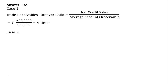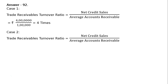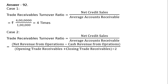Closing trade receivable Rs. 6 lakh. Trade receivables turnover ratio is equal to net credit sales upon average accounts receivable, that is net revenue from operations minus cash revenue from operations, which gives credit revenue from operations, whole divided by opening trade receivables plus closing trade receivables by 2. That is equal to Rs. 30 lakh minus Rs. 6 lakh.